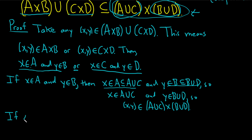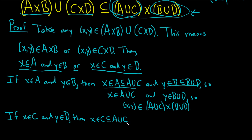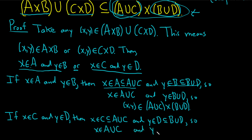Case 2: If x is in C and y is in D. We're trying to show (x, y) is in (A union C) cross (B union D). That means x is in C, which is contained in A union C, because every element in C is certainly in the union of C with anything else — in particular, the union of C and A, which is A union C. And y is in D, and we're trying to show it's in B union D. D is certainly a subset of B union D, because every element in D is also in B union D.